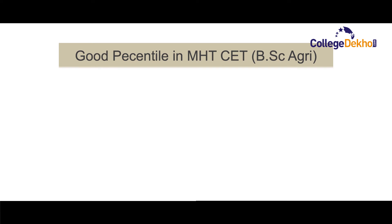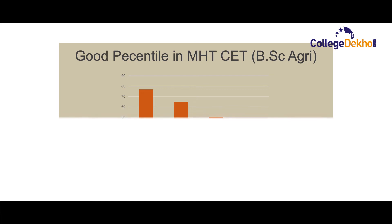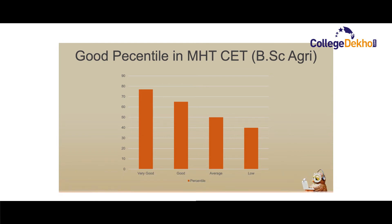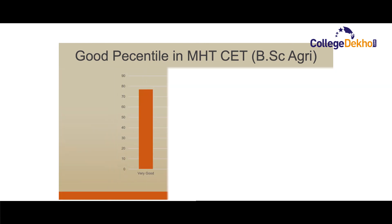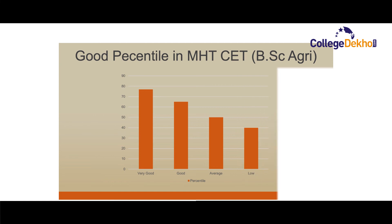Since admission to B.Sc Agriculture is done on the basis of percentile score in the entrance exam, we will discuss what is a good percentile in MHT CET for B.Sc Agriculture admission. A very good percentile is 75% or above. 65% or above can be considered a good percentile. A percentile of 50 or above can be considered average, and a percentile less than 40 can be considered a low percentile.